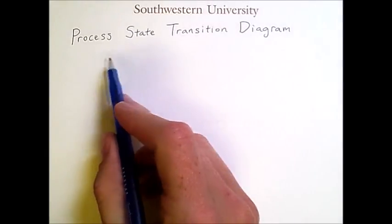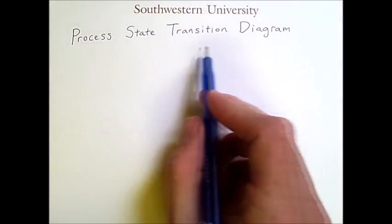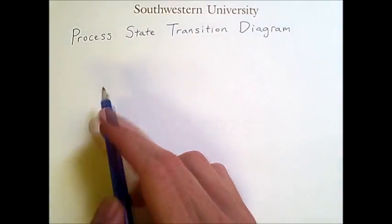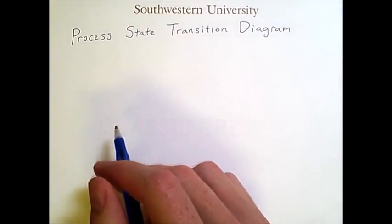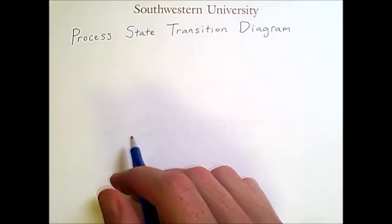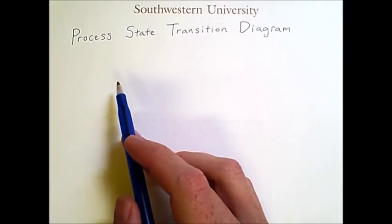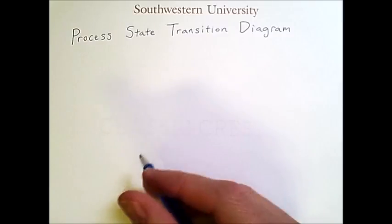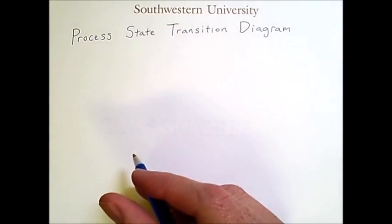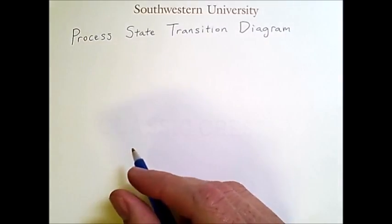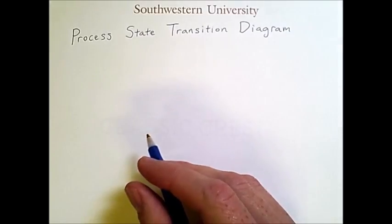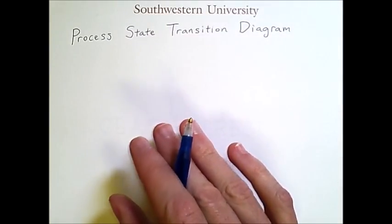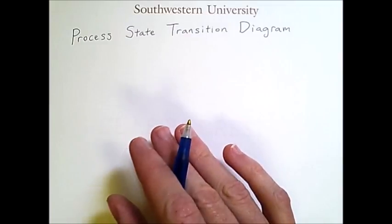This video is about the process-state transition diagram. At any given time, every process on a system is in a given state. There are several different models that we can use, and we'll go through some simple ones first and then work up to more complex ones. This is just a general idea of what common states are; however, every individual operating system has its own specific states.